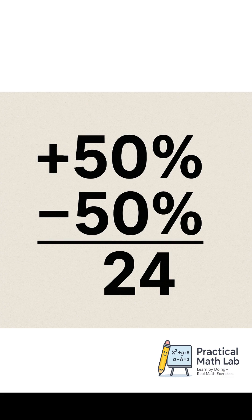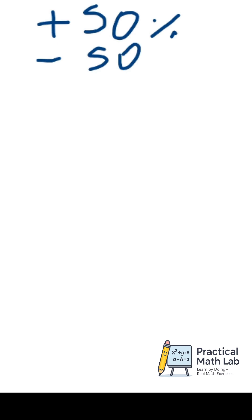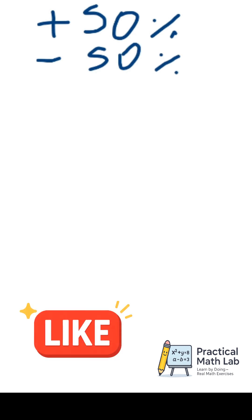Let's go to another exam question. A number is increased by 50%, then reduced by 50%. The final result is 24. What was the initial value? Most people do it like this: plus 50%, minus 50%. That cancels out, so the initial number was also 24.